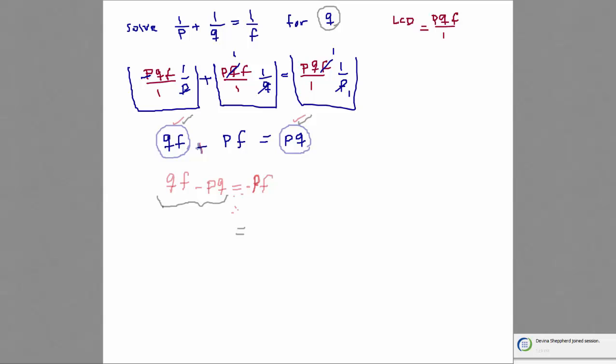So now, how would I solve for Q? Divide both sides by F minus P. Yes, now I can divide both sides by F minus P, and that's how you isolate Q.